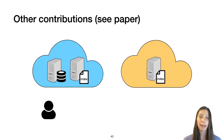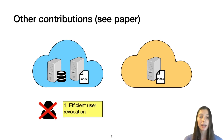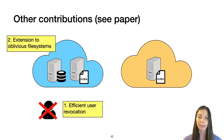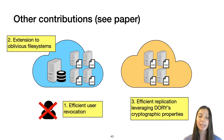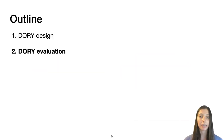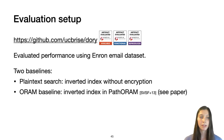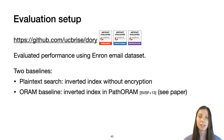There are some other contributions I don't have time to discuss now, including efficient user revocation, an extension to oblivious file systems, and efficient replication that leverages Dory's cryptographic properties. We implemented Dory, open sourced it, and passed artifact evaluation. We also evaluated our performance using the Enron email dataset, which is commonly used to evaluate searchable encryption schemes. We compared Dory's performance to two baselines: a plaintext search baseline using an inverted index without any encryption, and an ORAM baseline using an inverted index in path ORAM, which provides security guarantees comparable to those of Dory.